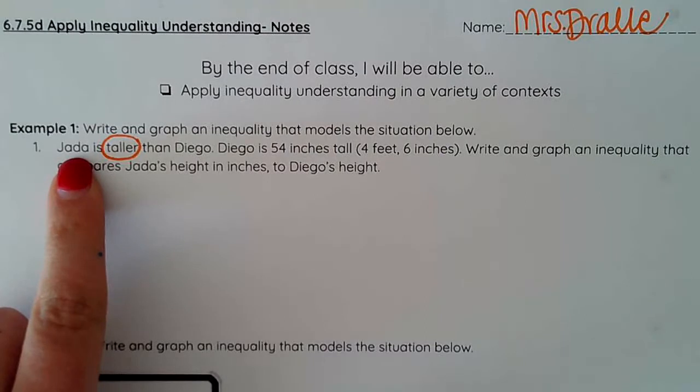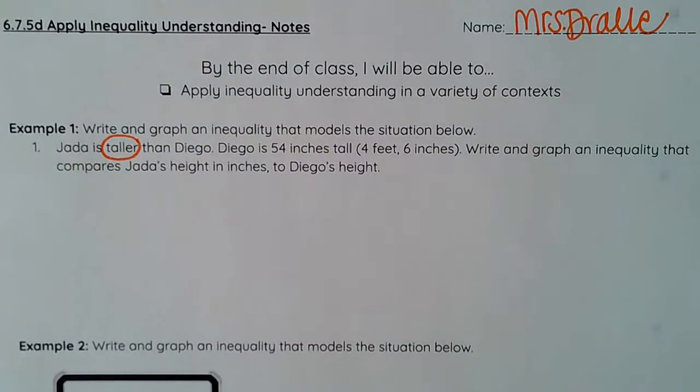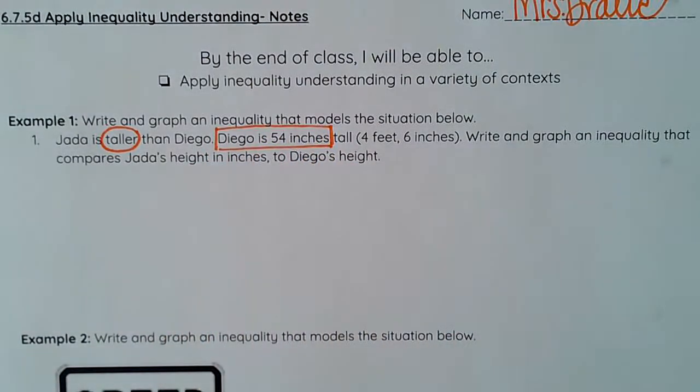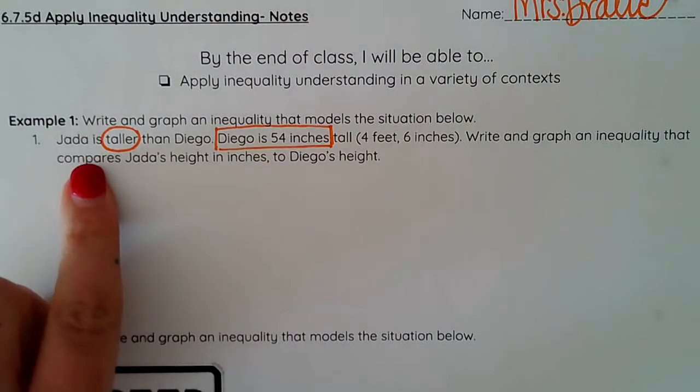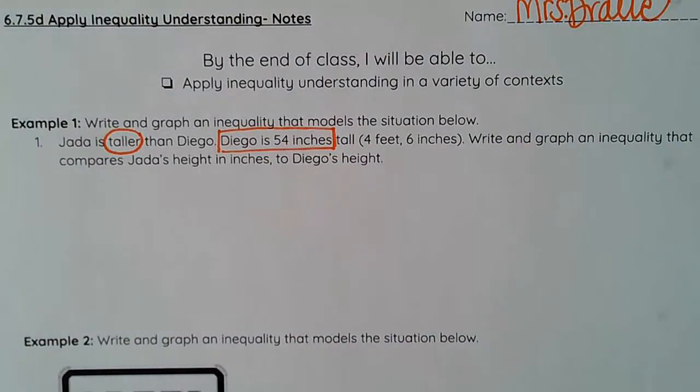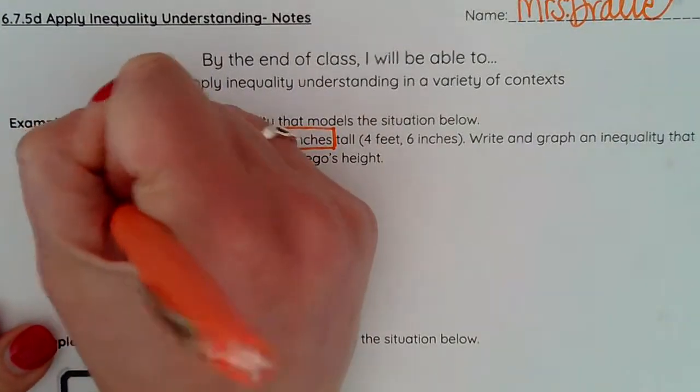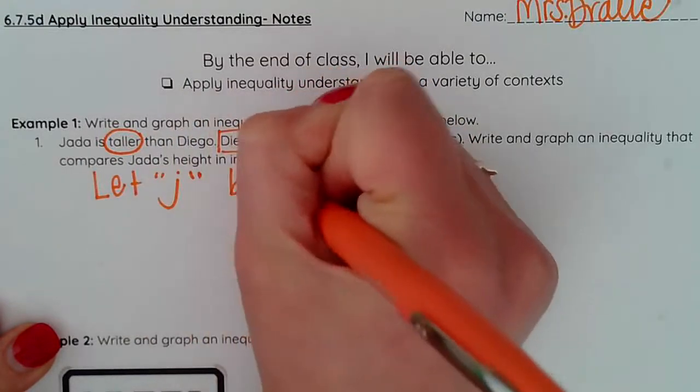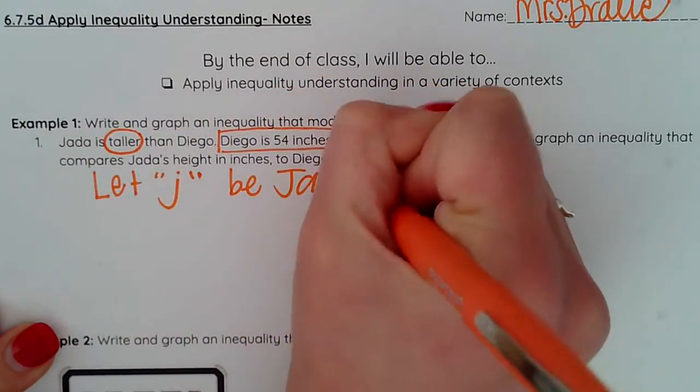So we know that Jada is taller or an inequality whereas Jada is greater in height than Diego. We know that Diego is 54 inches tall. So what we need to do is compare Jada's height to Diego's height. So we're going to have to have a variable. Because we're going to have a variable we need to write a let statement. So I'm going to say let J be Jada's height.